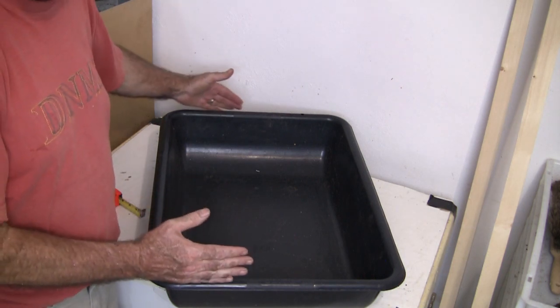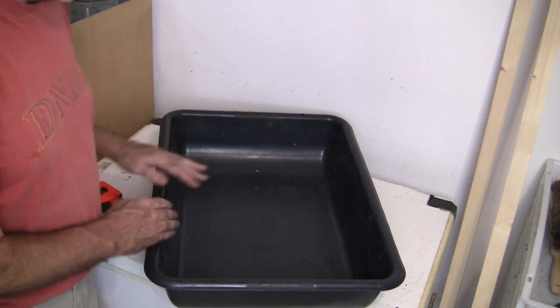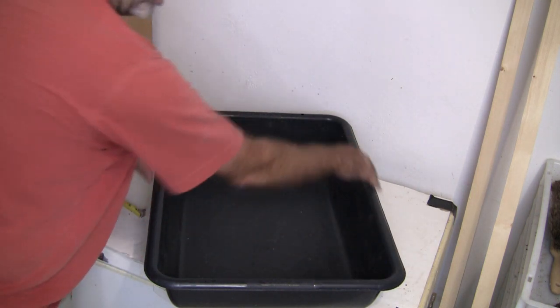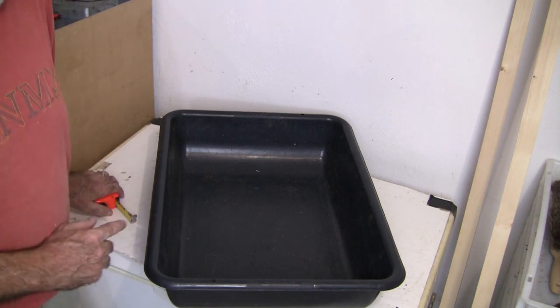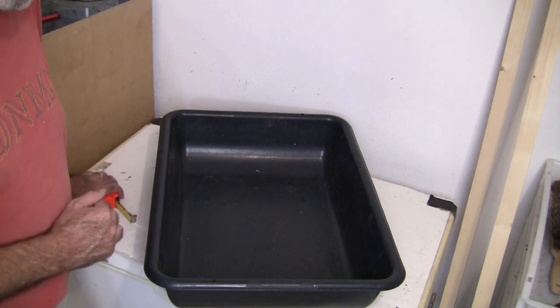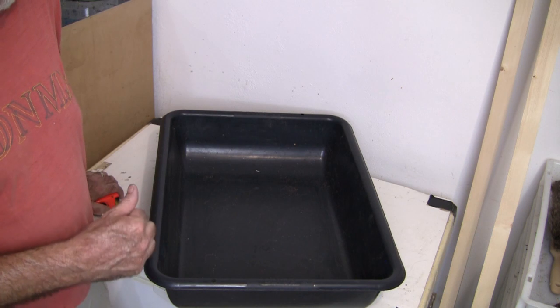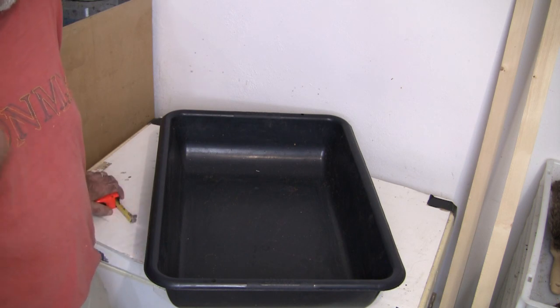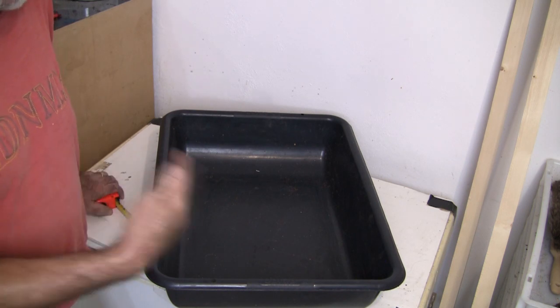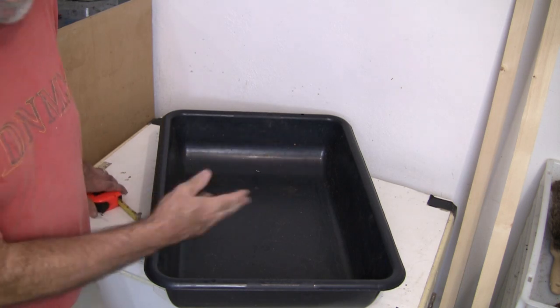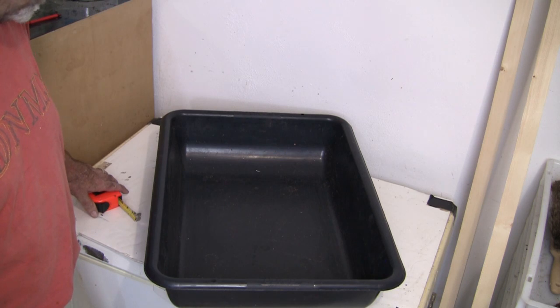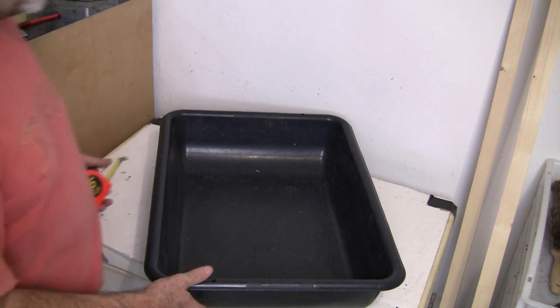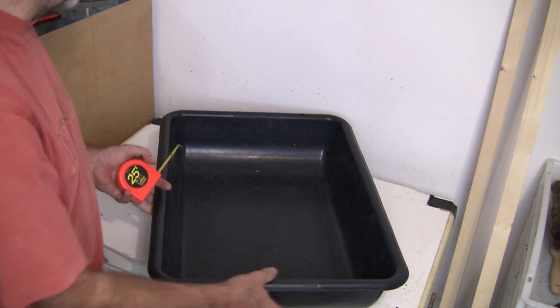So if your mortar tray happens to be wider or narrower than that, you're going to have to adjust the length dimensions of all the items I give you by that amount. So if it's 21 and a quarter wide, you're going to have to add one inch to all the lengths on the dimensions. Let's grab the pieces and I'll show you.